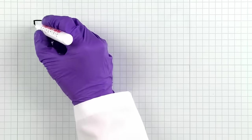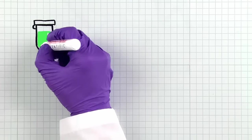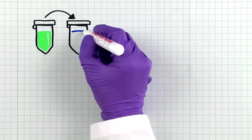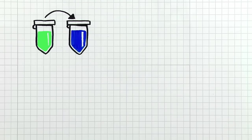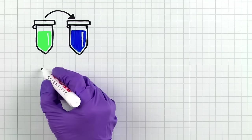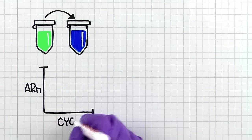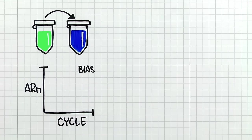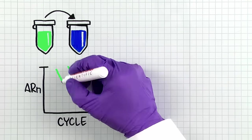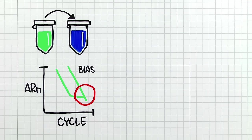You can test for RT bias by reverse transcribing two-fold dilutions of a known amount of RNA, then run a qPCR standard curve for each assay and endogenous control. The standard curve should be linear with a target slope of minus 3.323.